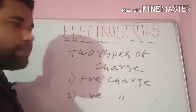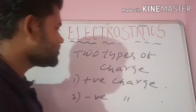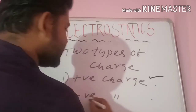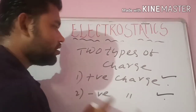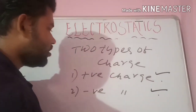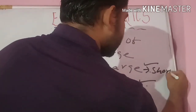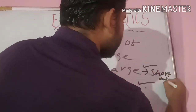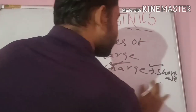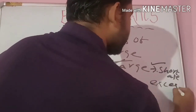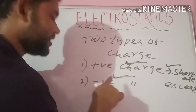Finally it was concluded that there are two types of charge: positive charge and negative charge. When there is a deficiency of electrons, then it is positive charge. When there is an excess of electrons in a body, then it is negative charge.